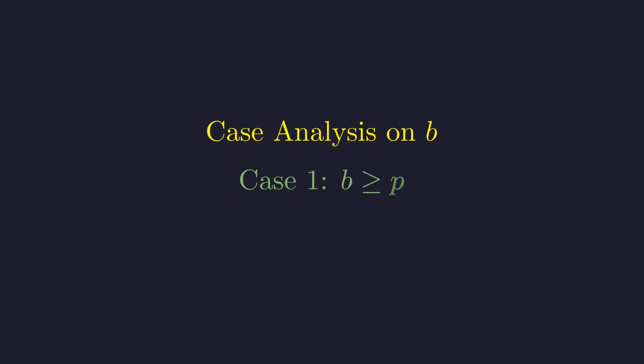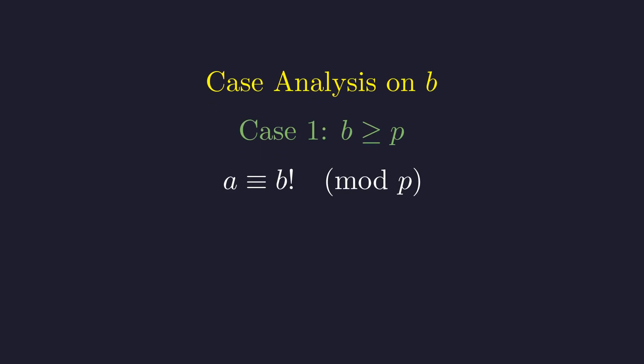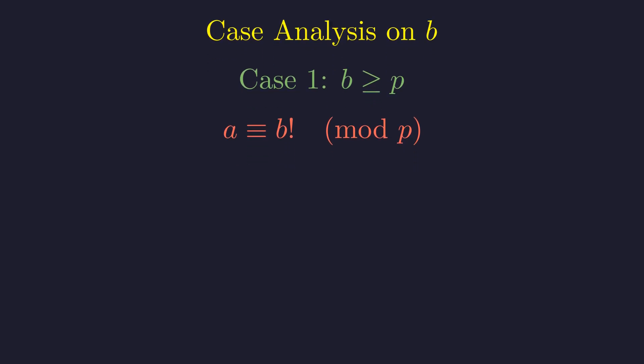First, let's consider the case where B is greater than or equal to the prime P. We begin with our key congruence. If B is greater than or equal to P, then the number P must be one of the factors in the expansion of B factorial. This implies that B factorial is a multiple of P, making it congruent to 0 modulo P. Consequently, A must also be a multiple of P.